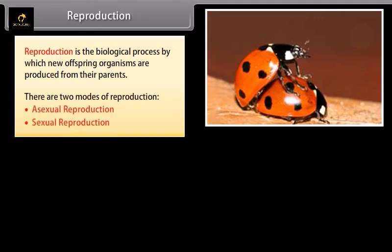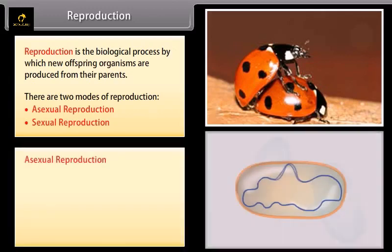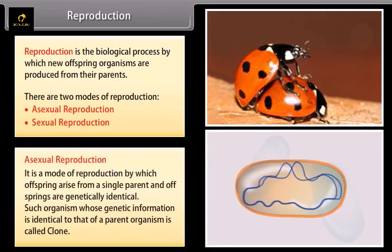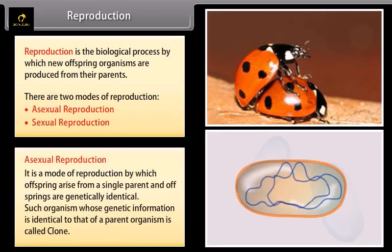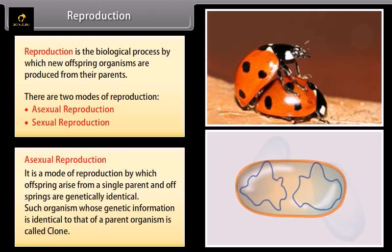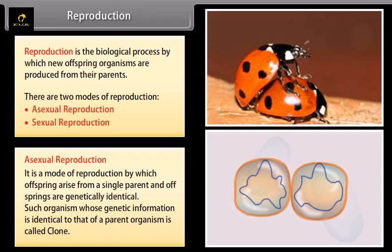Asexual reproduction is the mode of reproduction by which offspring arises from a single parent and are genetically identical. Such organisms whose genetic information is identical to that of a parent organism are called clones.